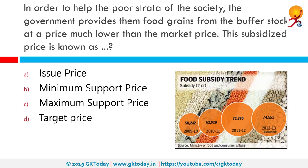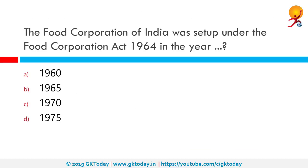In order to help the poor, the government provides food grains from the buffer stock at a price much lower than the market price. This subsidized price is known as the issue price — the correct answer is issue price. The Food Corporation of India was set up under the Food Corporation Act 1964; the correct answer for which year it was established is 1965.